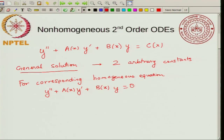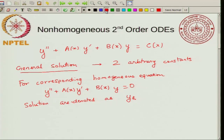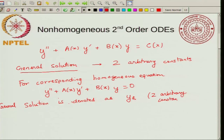For the homogeneous equation, the general solution is denoted as y_h of x. This y_h will have two arbitrary constants — we saw how to get y_h using a linear combination of basis functions. Now what we want to do is write a general solution for the non-homogeneous equation, which will also involve two arbitrary constants.